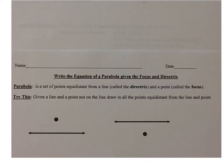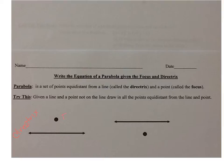Let's take a look at the 'try this.' Given a line — the directrix — and a point not on the line — the focus — draw all the points equidistant, meaning the same distance away, from the point and the line. The easiest point to identify is one that's the same distance away from the focus and from the directrix.